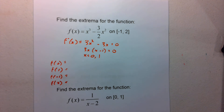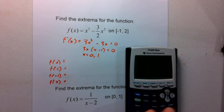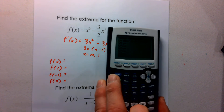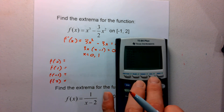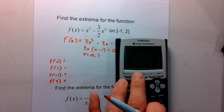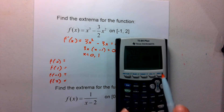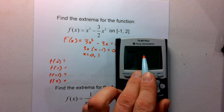It doesn't bother me that you use a calculator for this. We can go ahead and put that into the calculator. You can go to Y= and type in the original function: x³ minus (3/2)x². Then use the table function. Make sure your table setup has the independent variable set to ask, so you can go into the table and type in these numbers to get out the y-values.